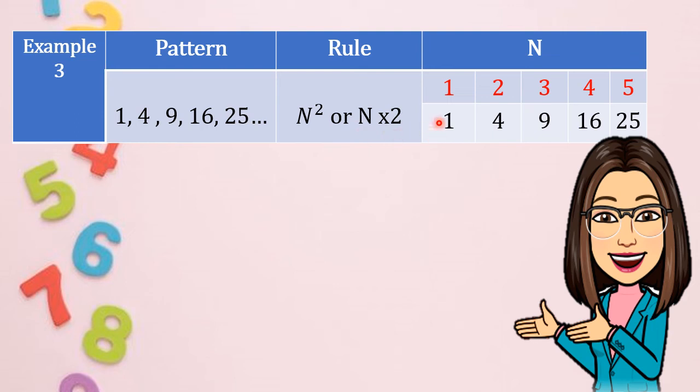1 squared is 1. 1 times 1 is 1. Then 2 squared is 4. We have 4. Next, 3 squared is 9. 4 squared is 16. 5 squared is 25. So what is the rule? We have N squared or N times 2. And the pattern is 1, 4, 9, 16, 25. Since this is an infinite pattern, what do you think the next term, following the same rule? Very good.